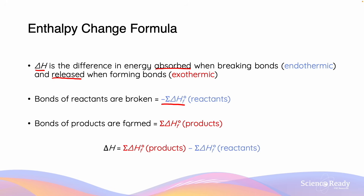Similarly, the bonds of the products being formed is described as the positive sigma of the delta HF — the enthalpy of formation — of the products. This is because the bond formation process for all the products is going to be an exothermic process. Using our first definition, delta H is therefore equal to the enthalpy of formation of the products minus the enthalpy of formation of the reactants.